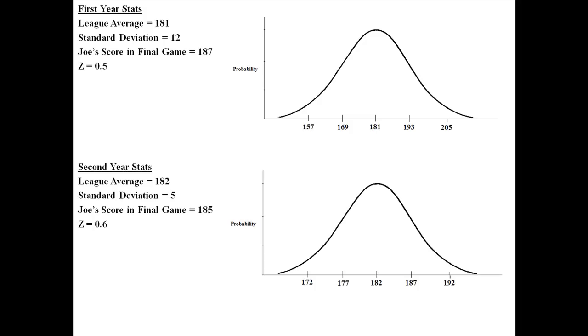So let me show you what those distributions look like. For the first year of stats, we have 181, the mean of 181 with a standard deviation of 12. And for the second year of stats, we have a mean of 182 with a standard deviation of 5.